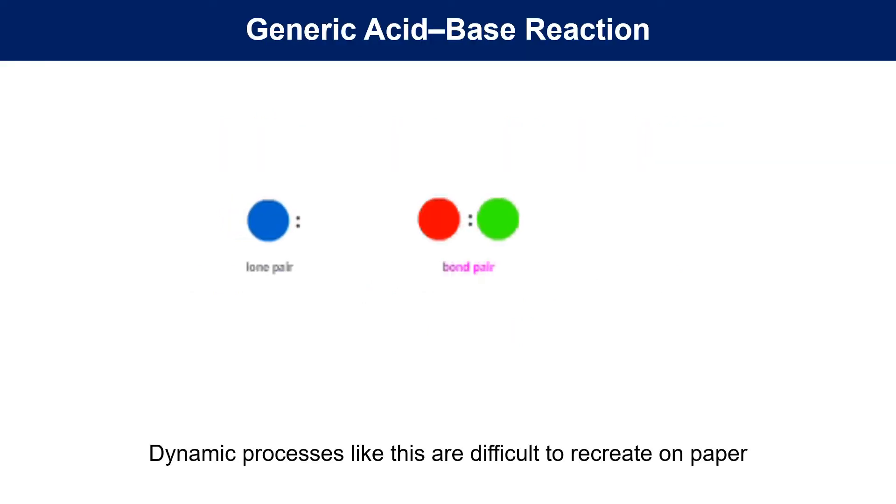While we need to think of chemical reactions as interactions between atoms and molecules that are moving, dynamic processes like this are difficult to recreate on paper. In this seemingly simple animation, the blue electron-rich species with a lone pair is attacking an electron-poor red atom with the green group breaking off to avoid breaking the octet rule.